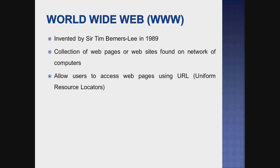It is a collection of webpages or websites found on a network of computers. As a user, how do we access this? Using a URL — like a web address. For example, www.webpages.com. If you go to Google.com, type it in the address bar and you will get the Google webpages.